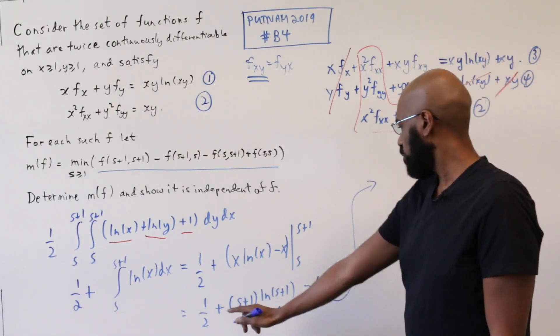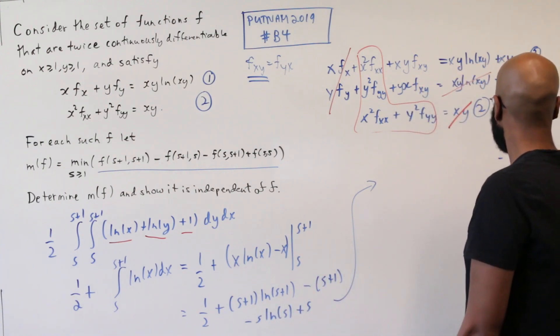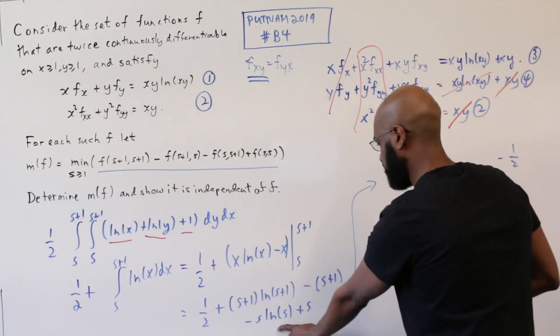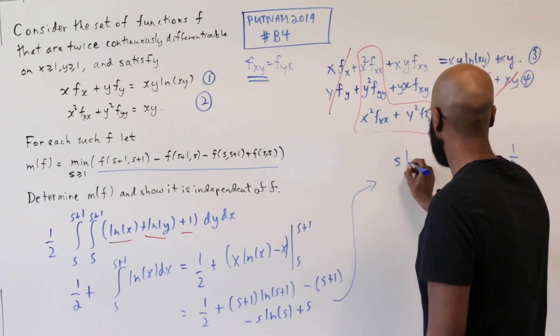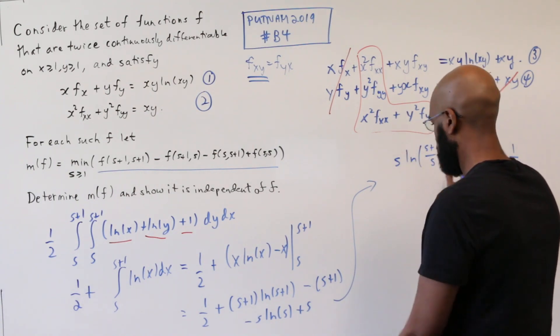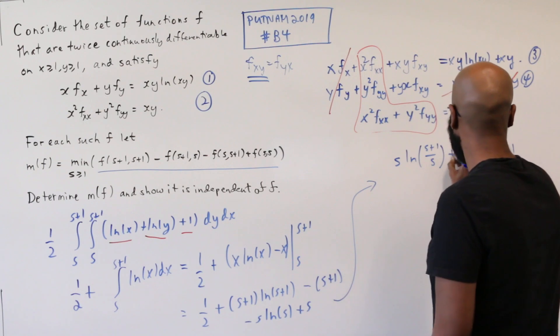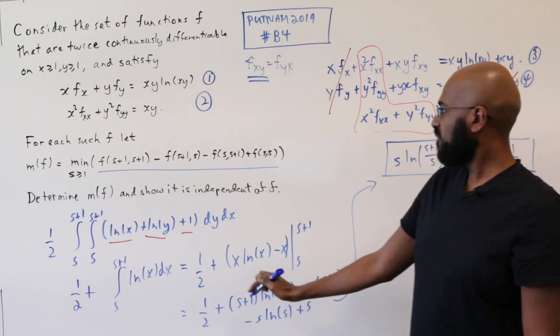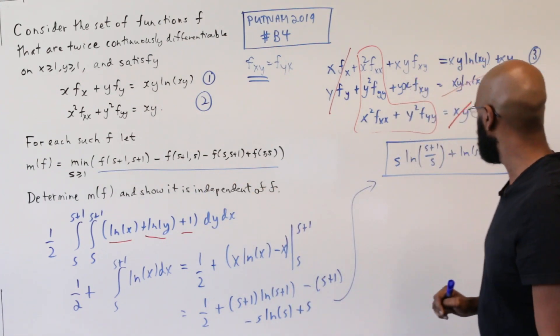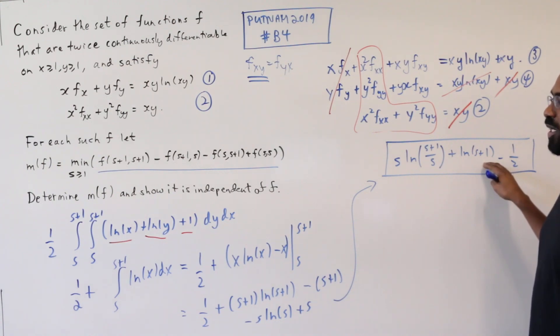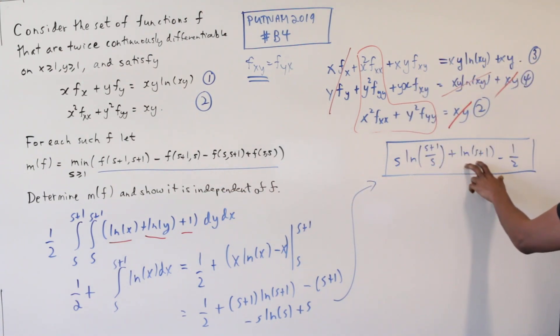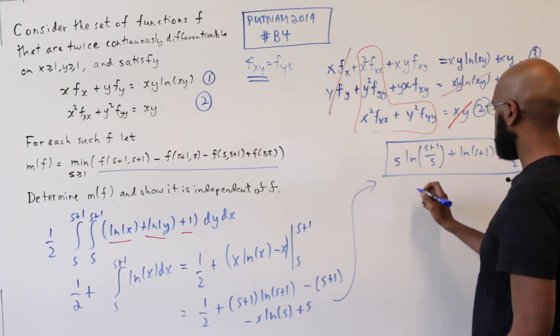The negative s and the s go away. We have a minus a half as our constant. And then I can group the s ln(s+1) and s ln s together. So we get s ln of (s+1)/s, and then plus ln of (s+1). So this is an explicit expression for what this underlined expression is in terms of f. And notice, first of all, we've addressed one question. This is independent of f. And also, we're looking at this expression over s greater than or equal to 1. And we notice that each of the pieces here is increasing. So the minimum happens exactly when s is 1.